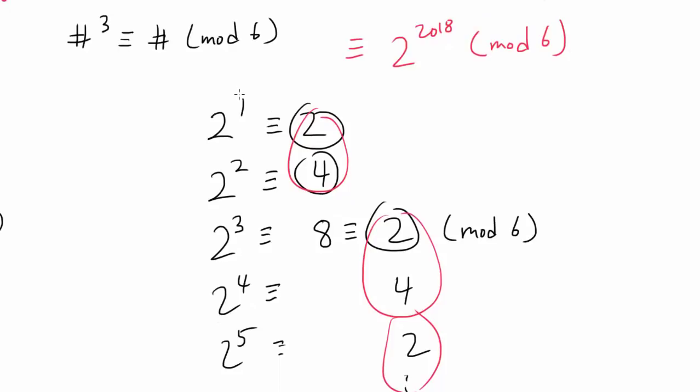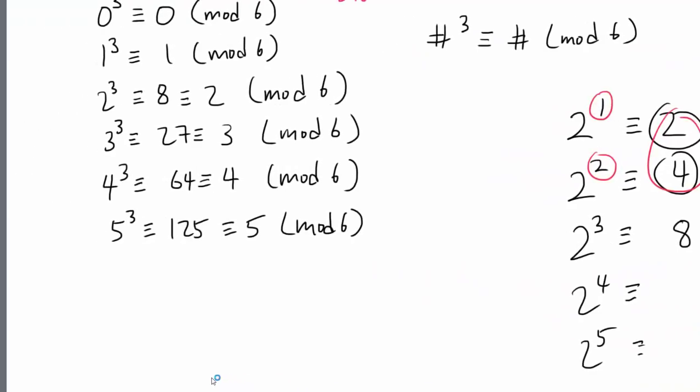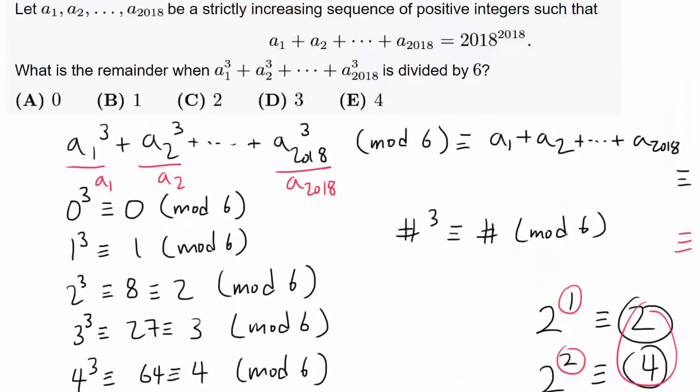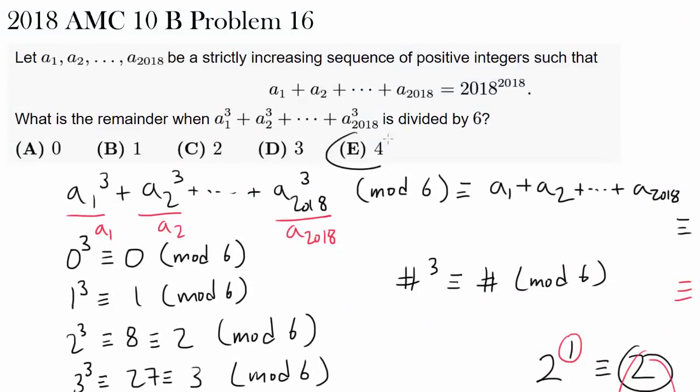For odd power, we get 2. And for even power, we get 4. So we know 2 to the 2018th power, 2018 is even, is congruent to 4 mod 6. And we are done. The answer to this question is 4. So E.